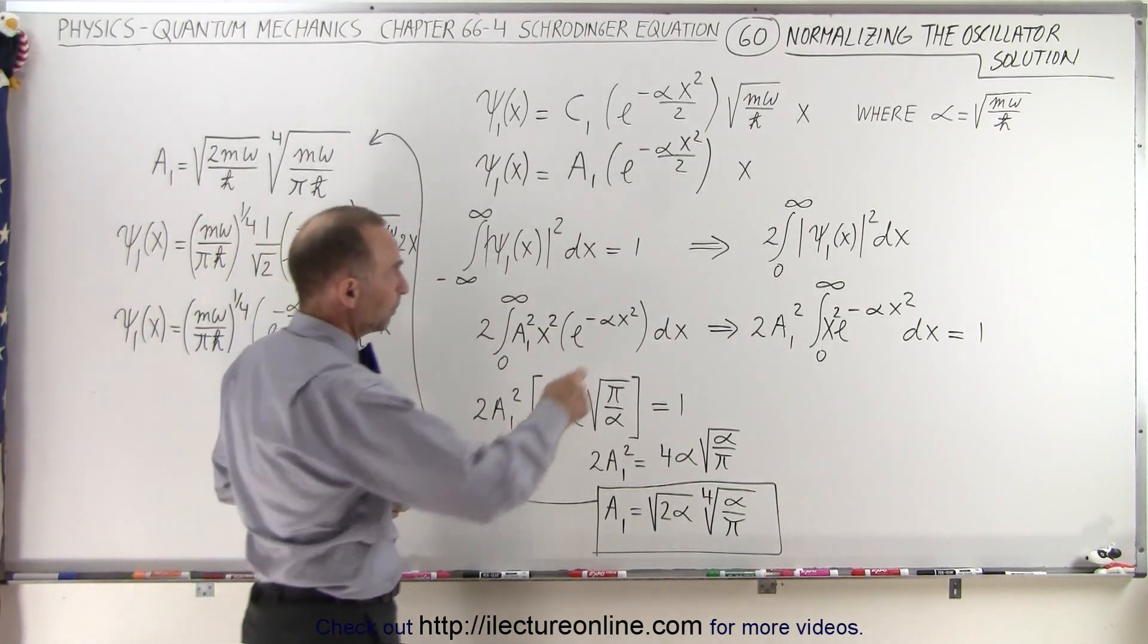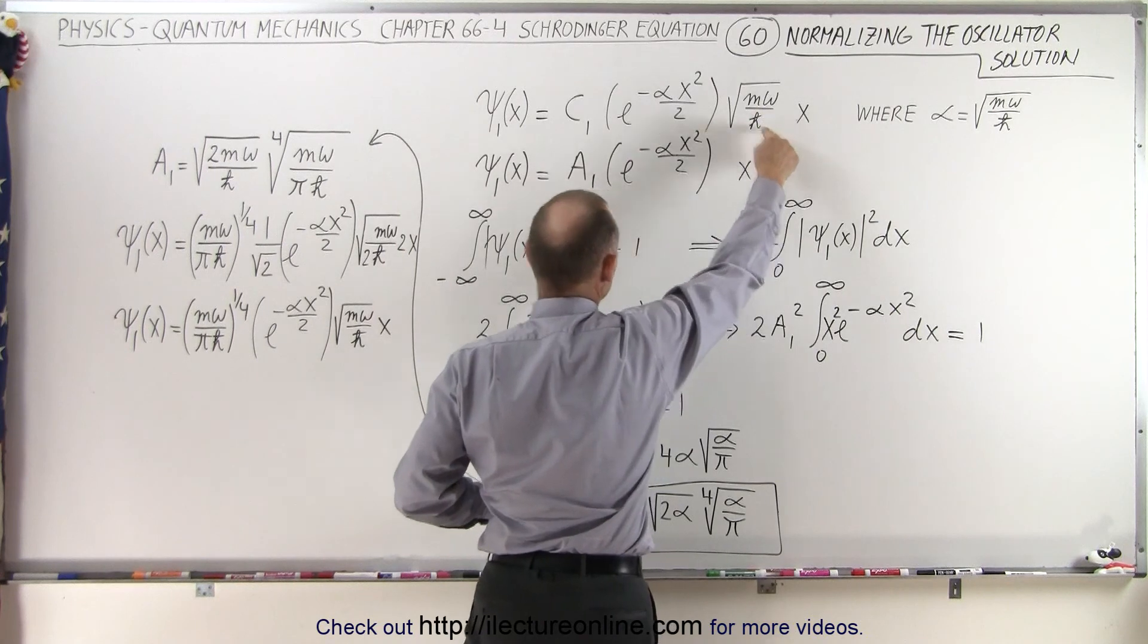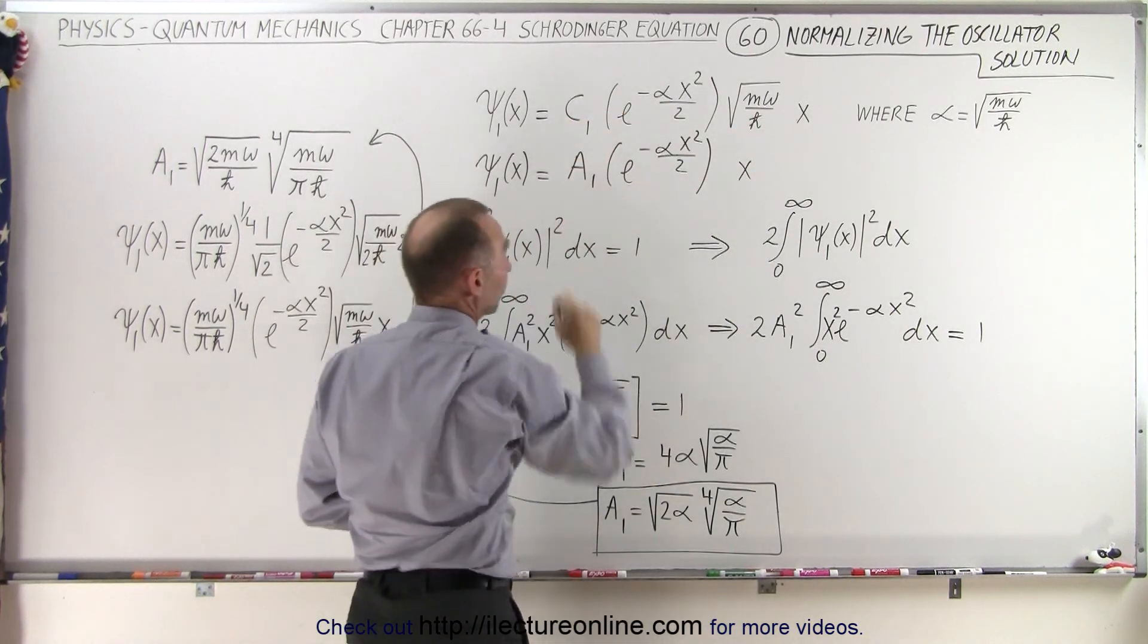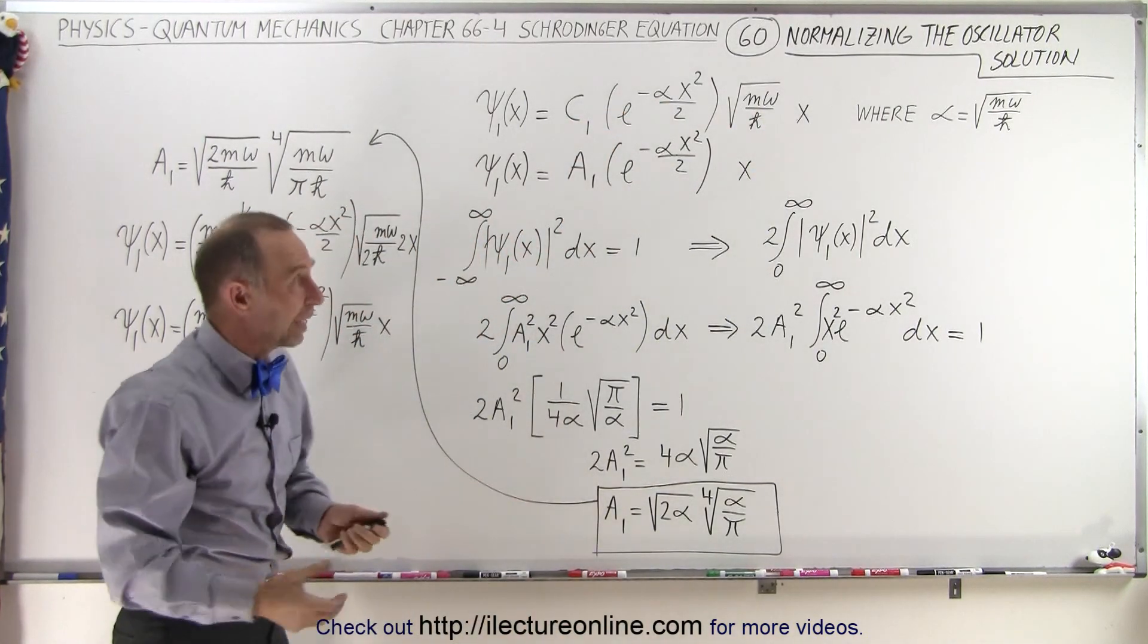What we're doing now is we're taking this constant right here and adding it to c1 to create a new constant a1, and we're going to normalize a1.